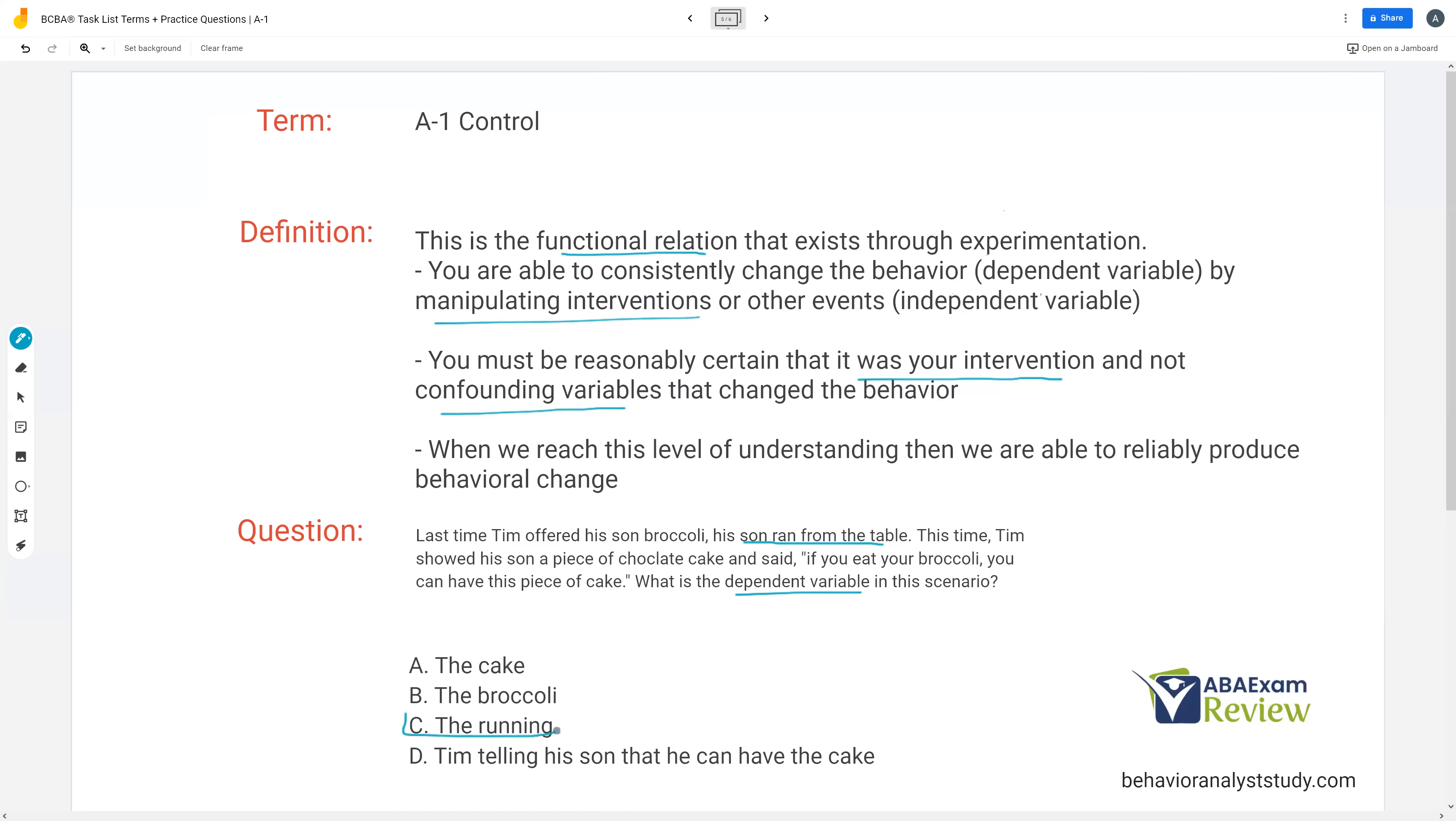So to demonstrate control, how would that happen? Well, to demonstrate control, Tim would have to record that once he introduced his intervention, his son stopped running from the table. And if he can reliably do that, that's control. And this is where things like our withdrawal designs come in. Because if Tim then withdrew the intervention and just presented the broccoli and his son ran away again, now we can really say, well, there's a strong correlation and a strong functional relation between our intervention and our dependent variable.